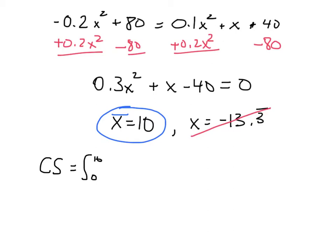Let me write that a little bit better here. Bear with me, that's a 10. We're going to integrate the demand equation, which is negative 0.2x² + 80. And then remember, we have to subtract off 10 times 60.